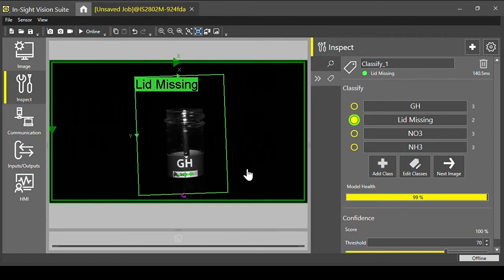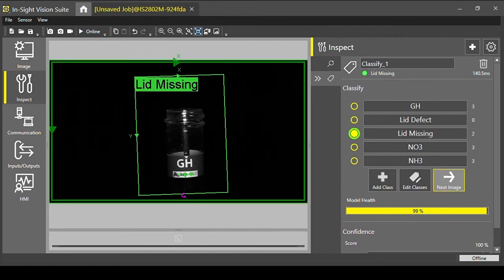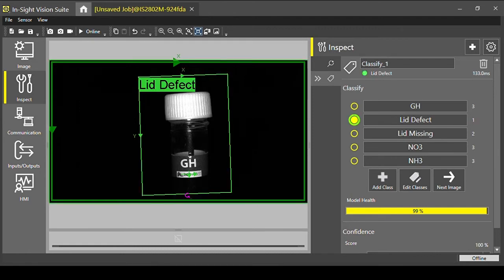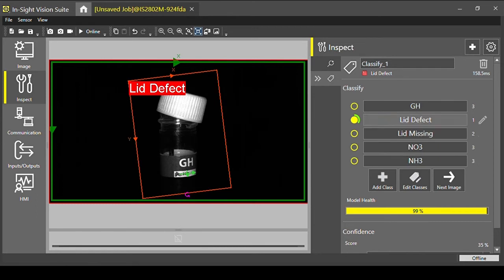Another class we can also add is where the lid may be present but it could be in a defective position. So we can just add a class lid defect. And again we can take another image. Label that as lid defect. And then we can maybe just change that defect ever so slightly so it looks different. And we can label that as lid defect. So that's how quickly we've set up the job from start to finish.